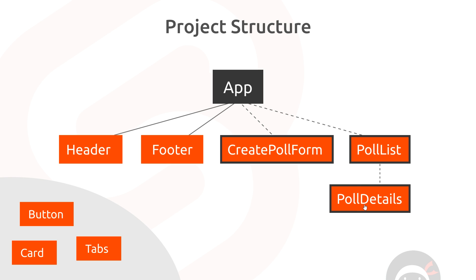Now if we wanted to vote on a poll — if we wanted to change the poll details — we would do that from poll details, emit a custom event up to poll list, which would then forward the event onto app, change it, and it would come back down to poll list and then back down to poll details. So there's a lot of up and down in all of this, and it would be nicer if we could store our data in a more central location.